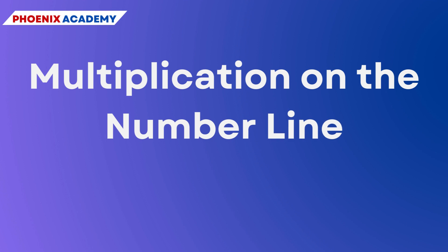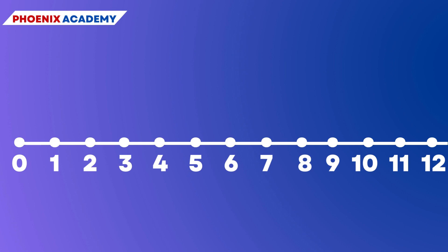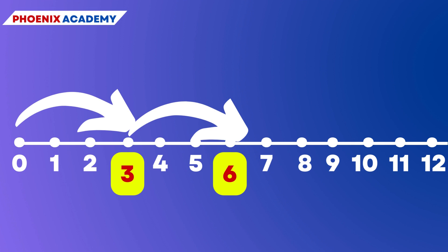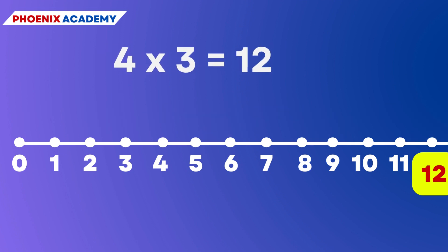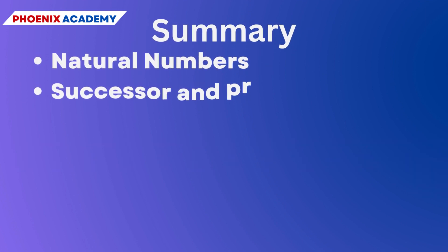Now let's learn multiplication of whole numbers on the number line. Let us try 4 × 3: start from 0 and move 3 units at a time to the right, making 4 such moves — 0 to 3, 3 to 6, 6 to 9, and 9 to 12. We reach 12, so 4 × 3 = 12.